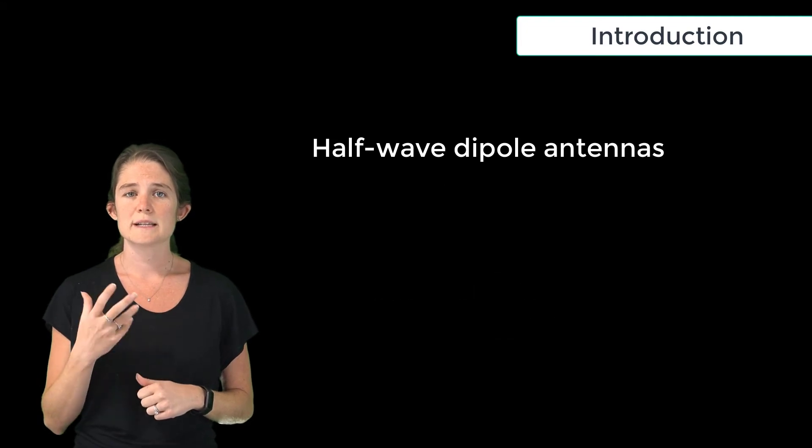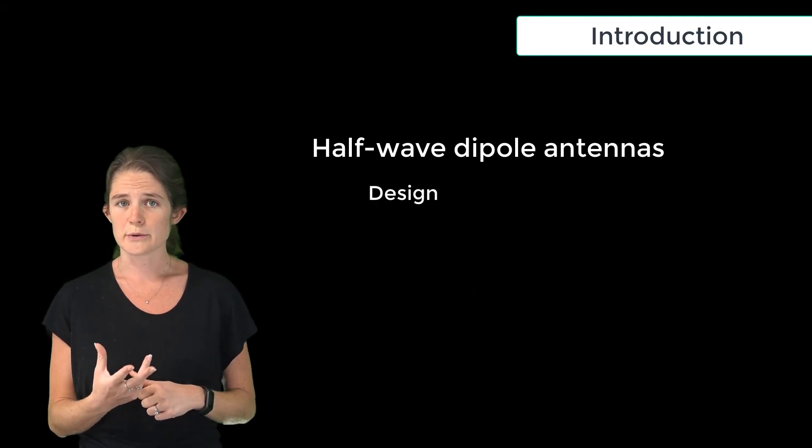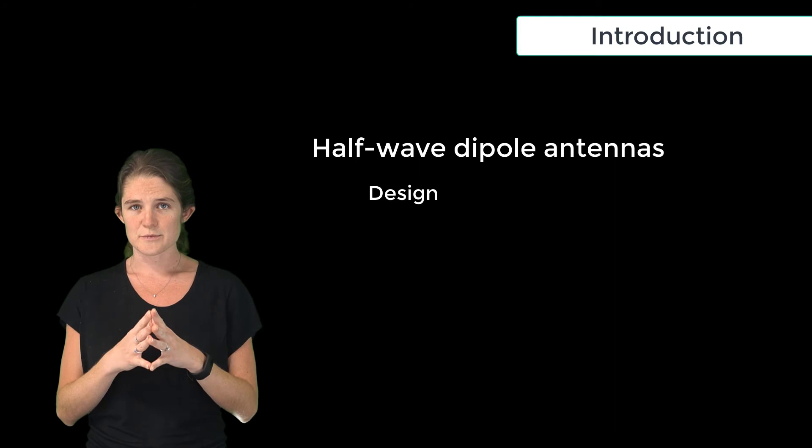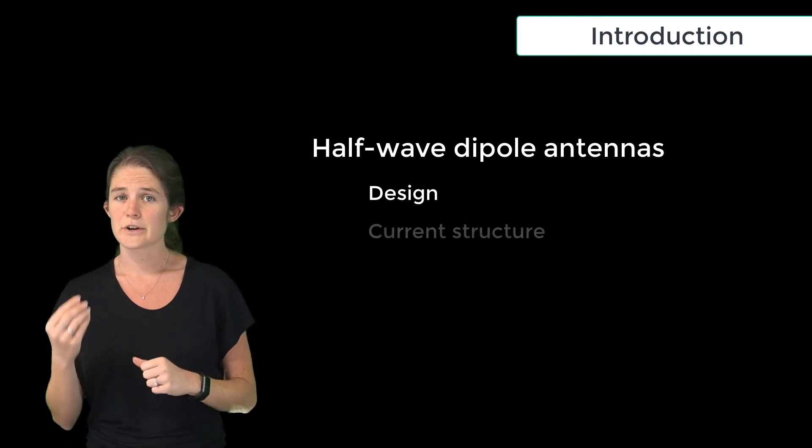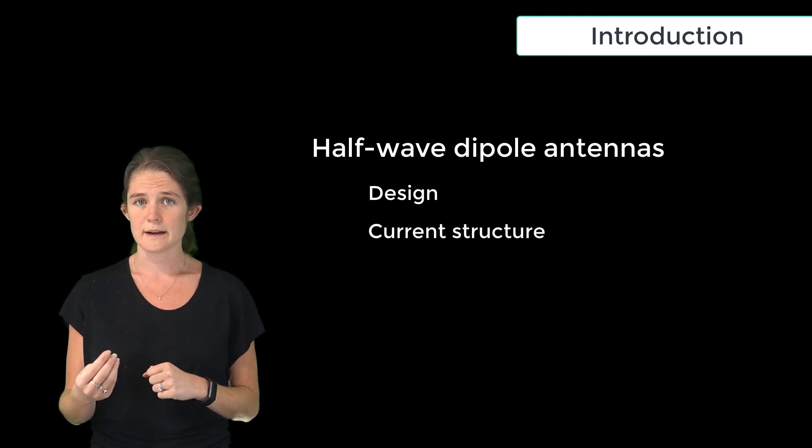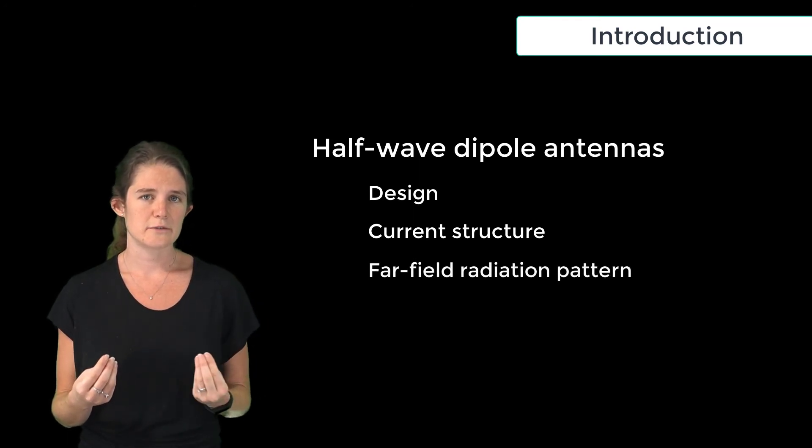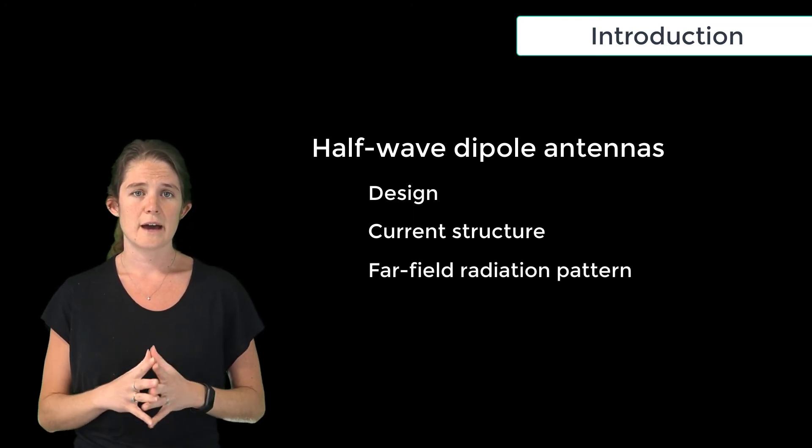In this module, we will discuss the general design of a half-wave dipole and introduce two attributes of the half-wave dipole at resonance: the current structure that forms on the antenna and the theoretical far-field radiation pattern of the half-wave dipole.